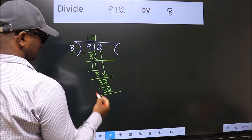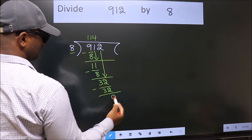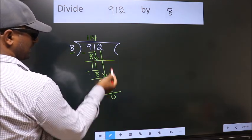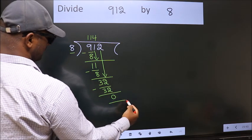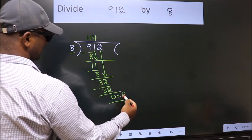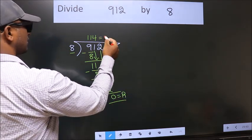Now, we subtract. We get 0. No more numbers to bring it down. So, we stop here. This is our remainder. This is our quotient.